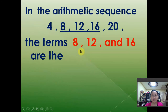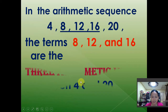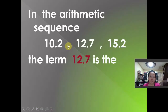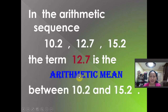Today we will talk about arithmetic means — what they are and how to determine them. In the arithmetic sequence 4, 8, 12, 16, and 20, the terms 8, 12, and 16 are the three arithmetic means between the first and last term. Similarly, in the sequence 10.2, 12.7, and 15.2, the term 12.7 is the arithmetic mean between 10.2 and 15.2.